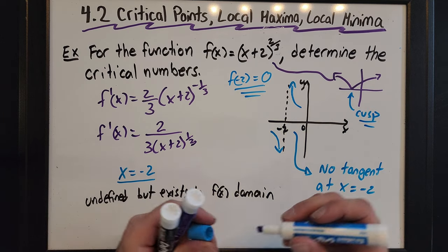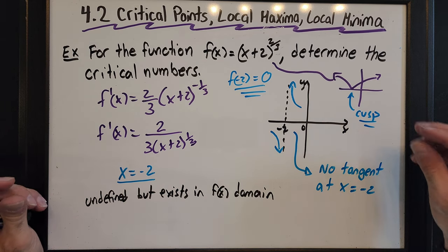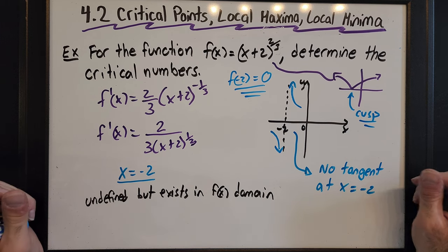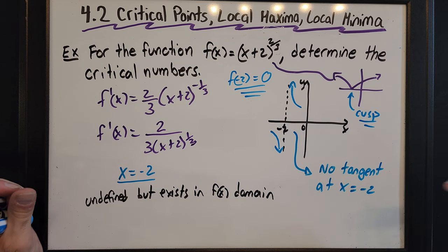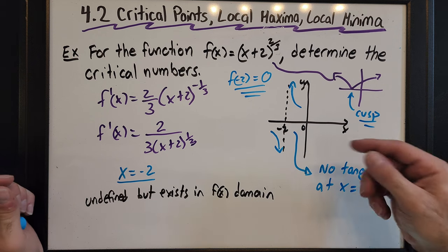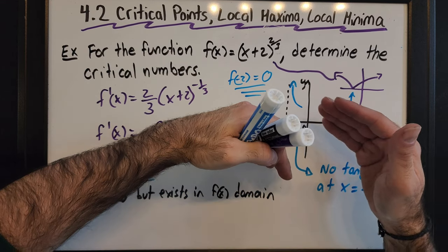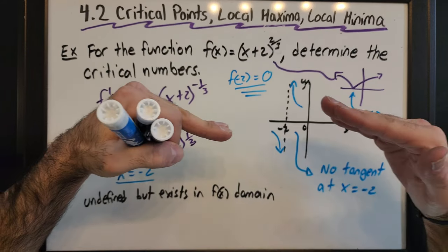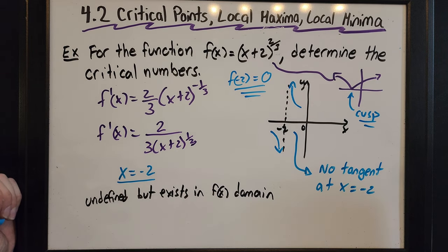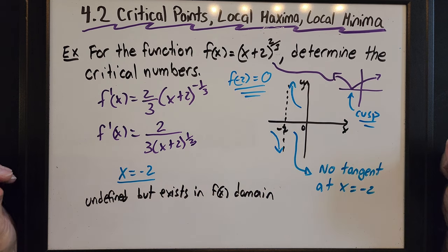We call this a cusp — similar to the absolute value function but curved. We have to be careful because the usual information doesn't communicate it as well. When you see an exponent like 2/3, it should alert you to the possible existence of a cusp. The slopes of tangents are negative on one side and positive on the other, approaching opposite infinities — not zero — so there can't be a tangent of zero there. That's it for critical points. Graphing the first derivative and seeing where it crosses the x-axis, like in that first example, is going to be very useful in the next few sections.